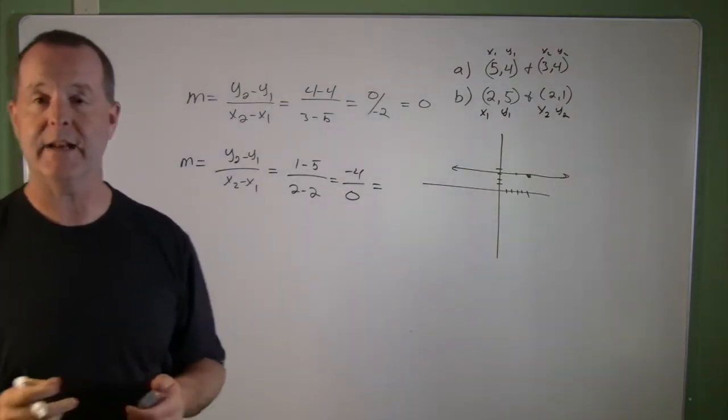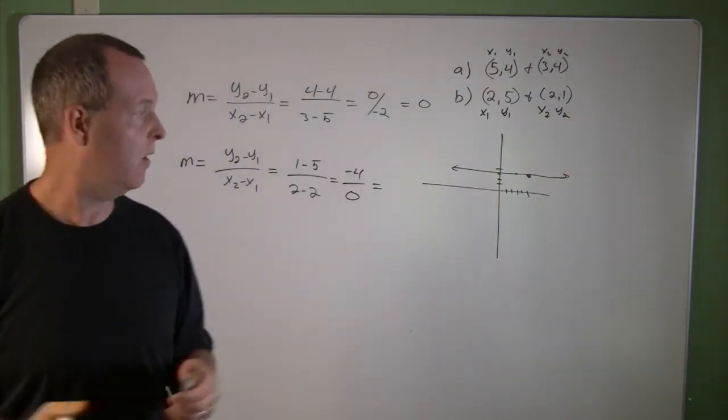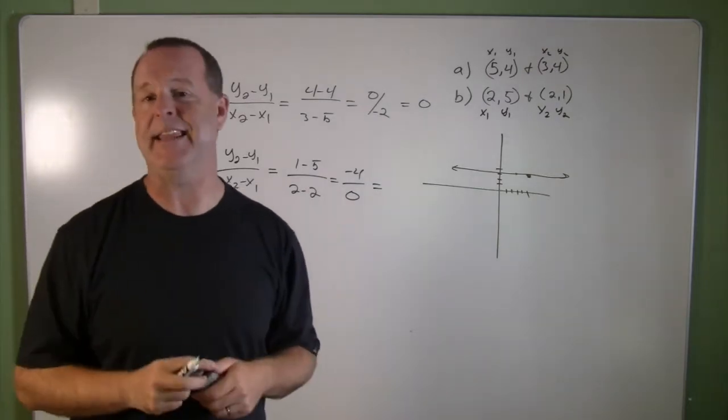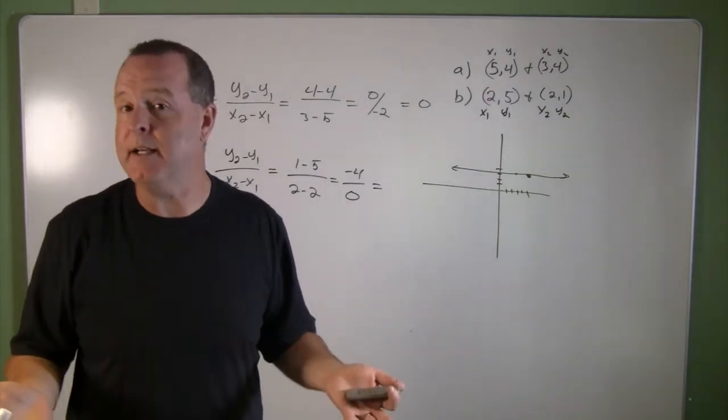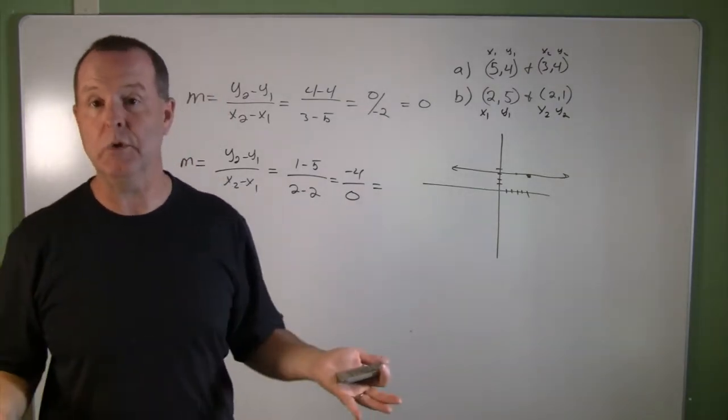Or negative 4 over 0 divided by 0. That doesn't mean anything. Can't divide by 0. There is no solution.